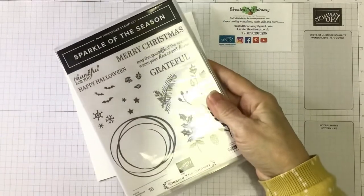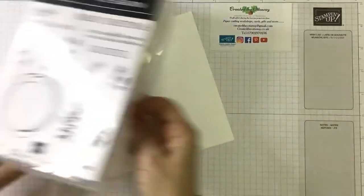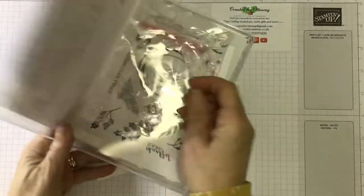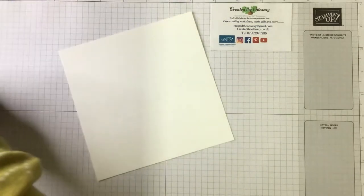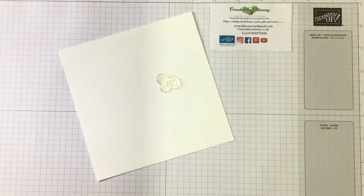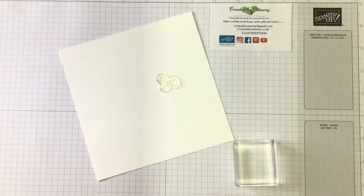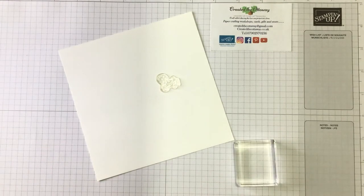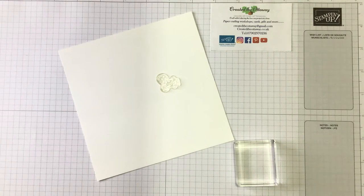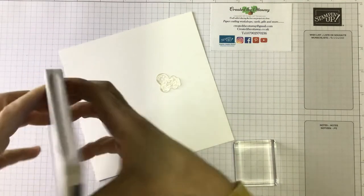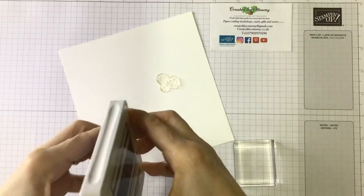So I'm going to use Sparkle of the Season stamp set. And as it's Christmas, I'm going to use that little snowflake stamp just all over. So I'm going to use a color that will hopefully show up for you. Shall we use, how about some Misty Moonlight? I haven't used that for a while. So let's use some Misty Moonlight.